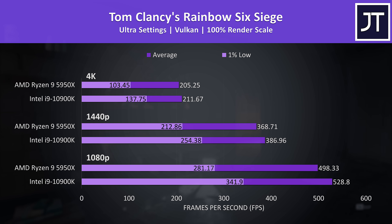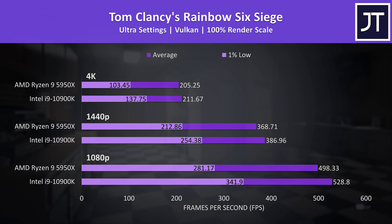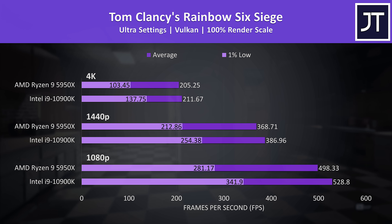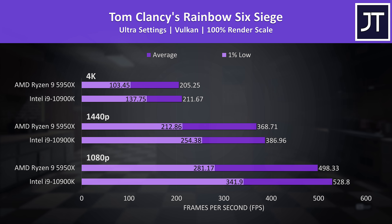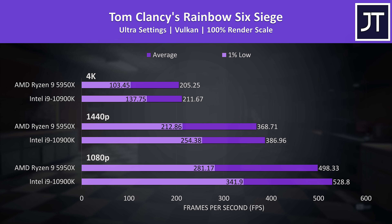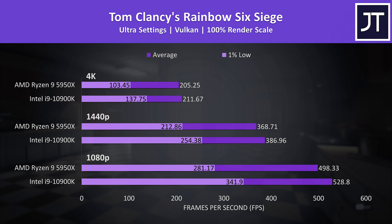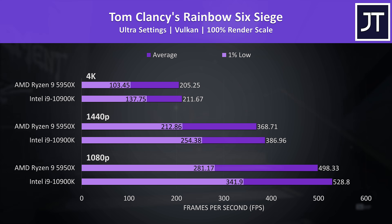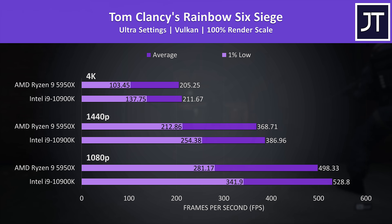Rainbow Six Siege was tested with the game's benchmark with Vulkan. Interestingly, the 10900K was ahead regardless of the resolution in use, and this improvement was higher in 1% low performance when compared to the averages.